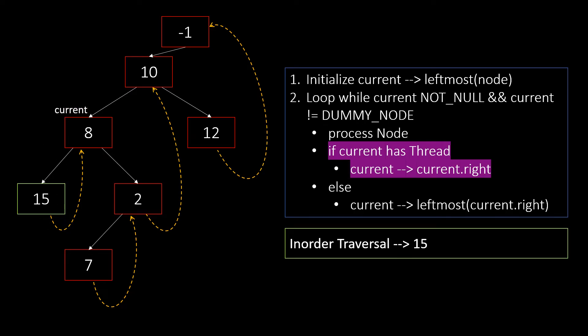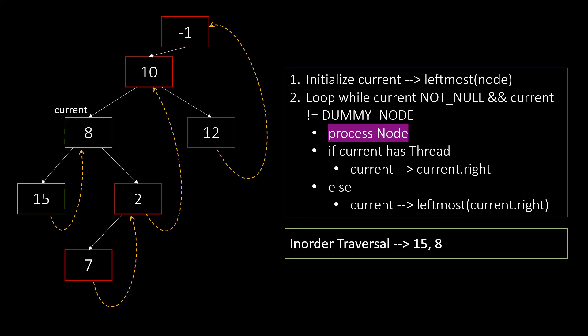Now, we again process the node and update current. Here, as there is a right node and no thread, current becomes leftmost node of current.right, which makes current as 7.